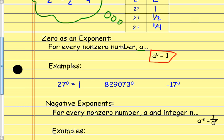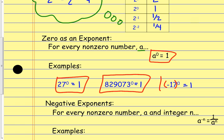829,073 to the zero power is also going to equal 1. Now, negative 17 to the zero power — technically that one is actually going to equal negative 1, because there are no parentheses around it. I should have parentheses. But any non-zero number raised to the zero power is going to equal 1.